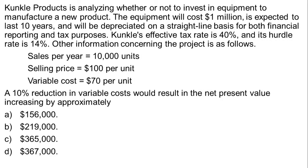Here we have a question where there's a lot of information but there's a very good narrowing statement, so we don't have to do a huge amount of calculations. Kunkel Products is analyzing whether or not to invest in equipment to manufacture a new product. The equipment will cost a million dollars, is expected to last 10 years, and will be depreciated on a straight-line basis. Kunkel's effective tax rate is 40% and its hurdle rate is 14%. Sales are 10,000 units per year at a selling price of $100 per unit and a variable cost of $70 per unit.